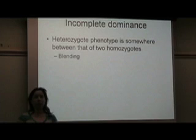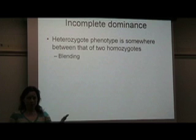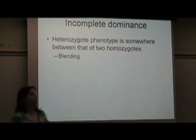Another type of inheritance is called incomplete dominance, and in incomplete dominance we have a blending situation. So you have the homozygous dominant which is one color, you have the homozygous recessive which is another color, and then the heterozygous which has one dominant and one recessive allele is going to be a mixture or a blending. So it would be like a black horse with a white horse and all of the offspring would be gray horses.